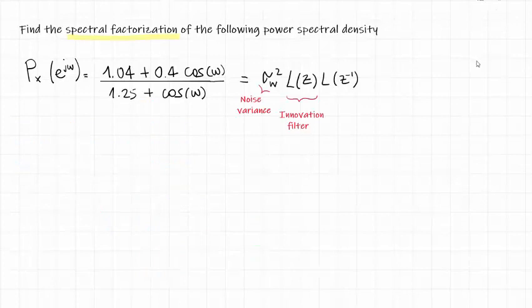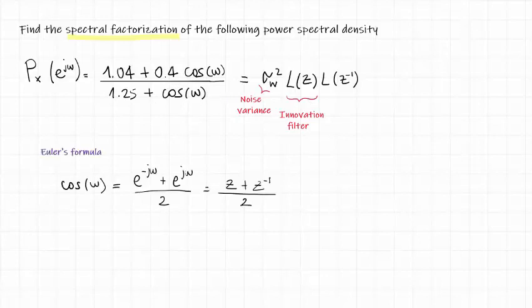So, back to the exercise, we want to find the noise variance and the innovation filter. And the first thing we want to do is to rewrite this rational polynomial in a polynomial in Z. To do so, we can use Euler's formula to rewrite the cosine as Z plus Z to the power minus 1 divided by 2.